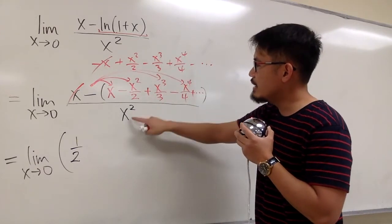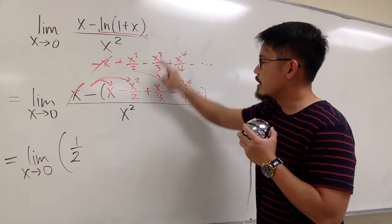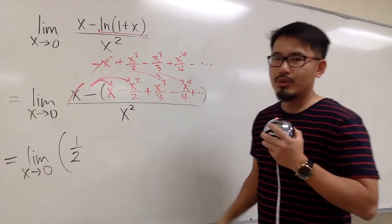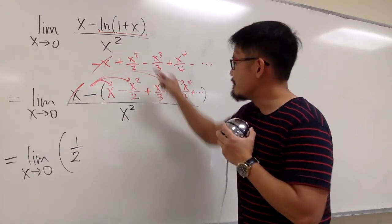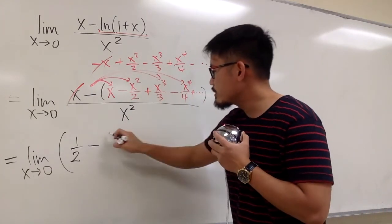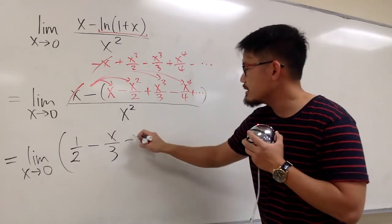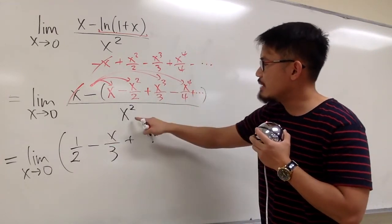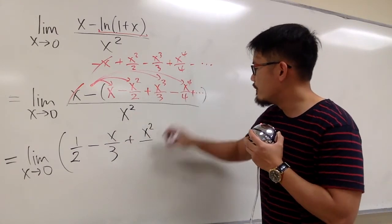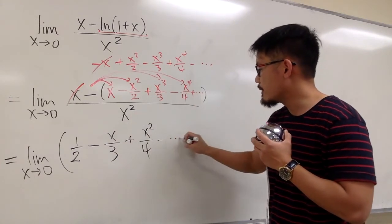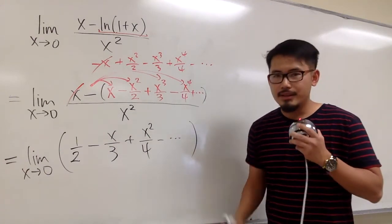Next, we have x³ divided by x², which gives us x to the first, and that's a minus. We have x/3, and then the next one is x⁴ divided by x², so we have x²/4, and so on.